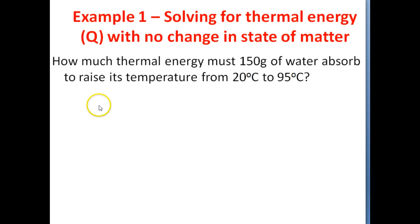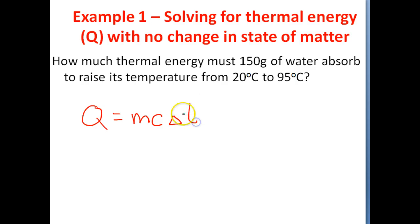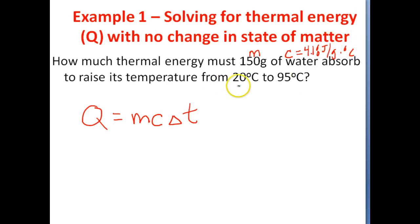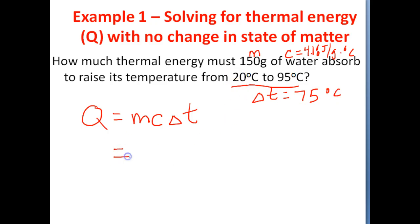To begin with, let's get our formula down. We know that Q equals mcΔT — the mass of the object times its specific heat times its change in temperature. In this problem, 150 grams is going to be the substance's mass. We're talking about water, and if you look on a table of specific heat values you'll find that the specific heat of water is 4.18 joules over grams times degrees Celsius. The temperature is increasing from 20 to 95 degrees Celsius, so delta T is 75 degrees Celsius. Now we can simply plug these into the thermal energy equation.